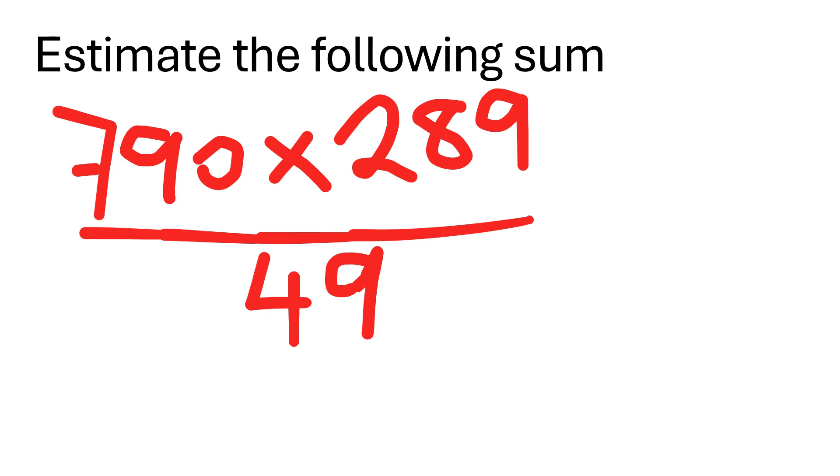Okay folks, so we're asked to estimate the following sum, 790 multiplied by 289, all over 49.